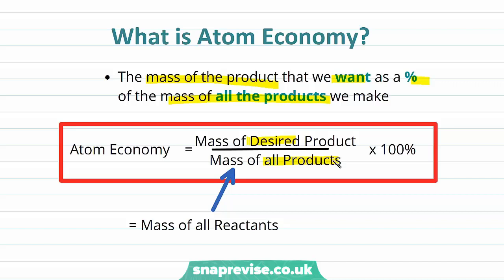Importantly, the mass of all the products is equal to the mass of all the reactants, and that's because, as discussed in a previous video, the atoms in our reactants are rearranged to form our products.